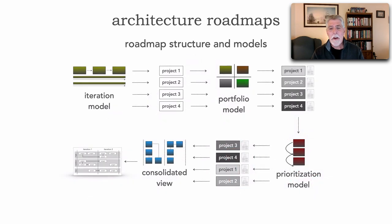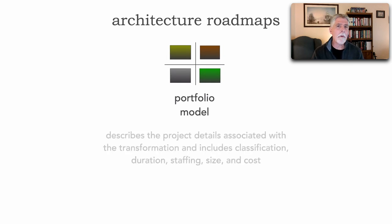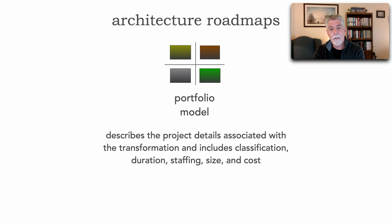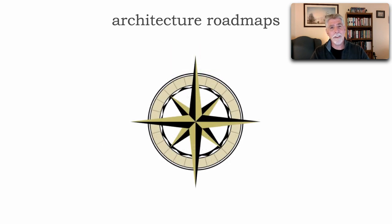In today's lesson we're going to take a look at the portfolio model. The portfolio model really describes the project details associated with the transformation. In our prior lesson we looked at identifying what needs to happen through those iterations. Now we fully qualify those including classification, duration, staffing, size, cost, and documentation of really the details of what needs to happen. The classification is where things really get interesting.